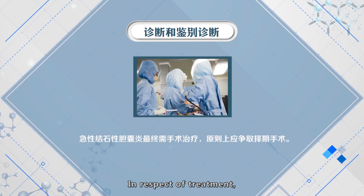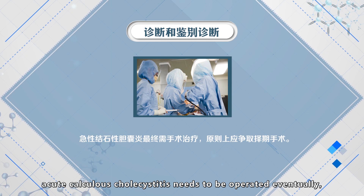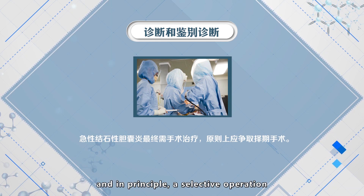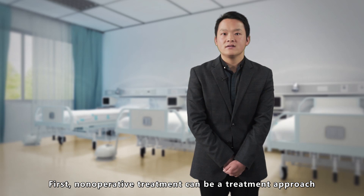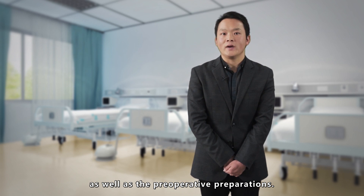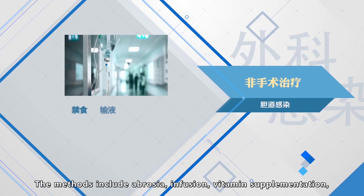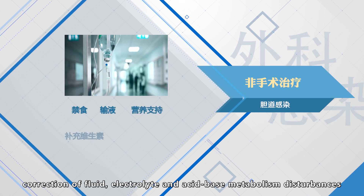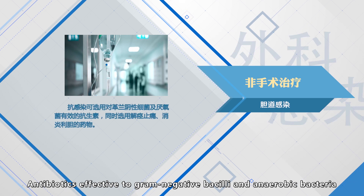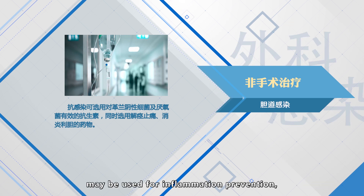In respect of treatment, acute suppurative cholecystitis needs to be operated eventually. In principle, a selective operation should be arranged as late as possible. Non-operative treatment can be a treatment approach as well as preoperative preparation. The methods include gastric decompression, nutritional supplementation, correction of fluid, electrolyte and acid-base metabolic disturbances, and antibiotics. Gram-negative and anaerobic bacteria coverage may be used for infection control.